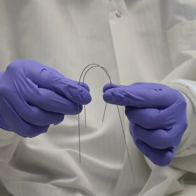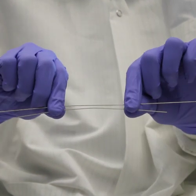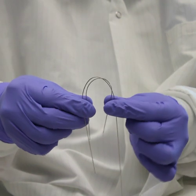In the third, he shows that both the nitinol and the stainless steel can achieve a similar radius of curvature.